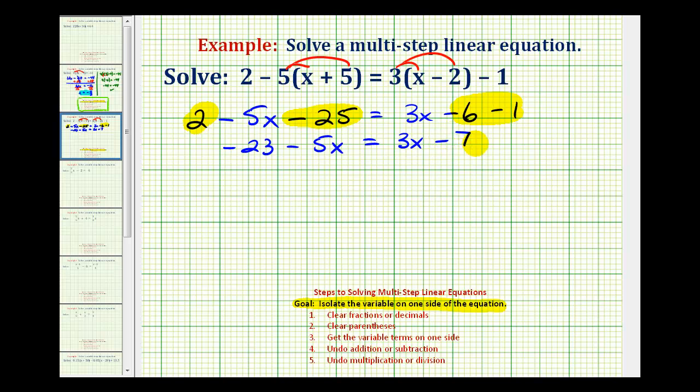Now notice on this equation we have variable terms on both sides. If our goal is to isolate the variable on one side, we need to add or subtract to eliminate one of the variable terms on either side. So if we want to eliminate the minus five x on the left, we can add five x to both sides. Or if we want to eliminate this positive three x, we could subtract three x on both sides. It seems most prefer to have the variable terms on the left side, so we'll undo this positive three x by subtracting three x on both sides of the equation.